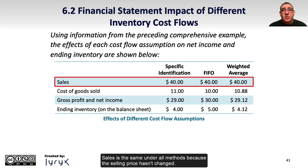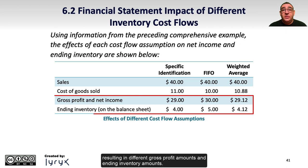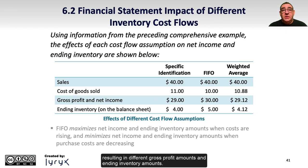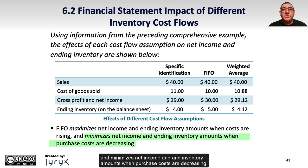Sales is the same under all methods because the selling price hasn't changed. We saw how we calculated the different cost of goods sold amounts in Learning Objective 1, resulting in different gross profit amounts and ending inventory amounts. FIFO maximizes net income and ending inventory amounts when costs are rising, and minimizes net income and ending inventory amounts when purchase costs are decreasing.